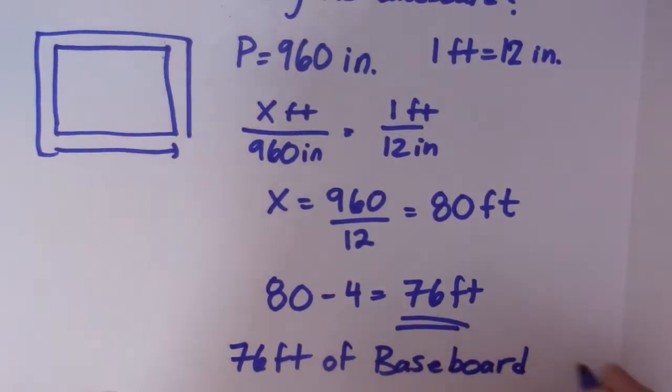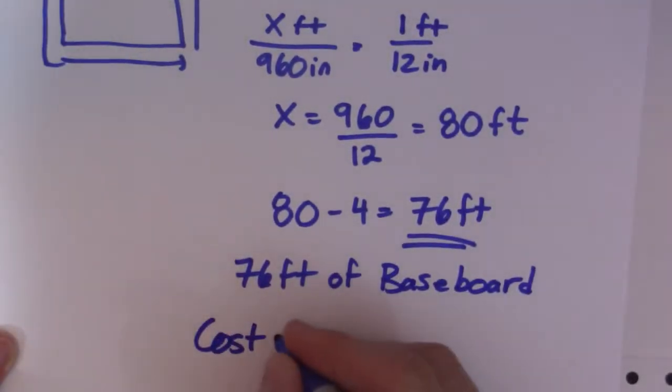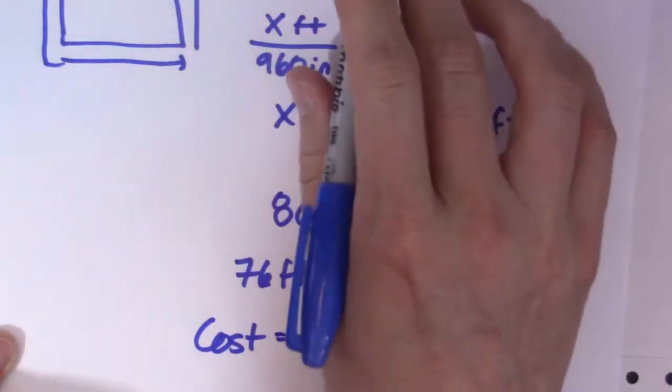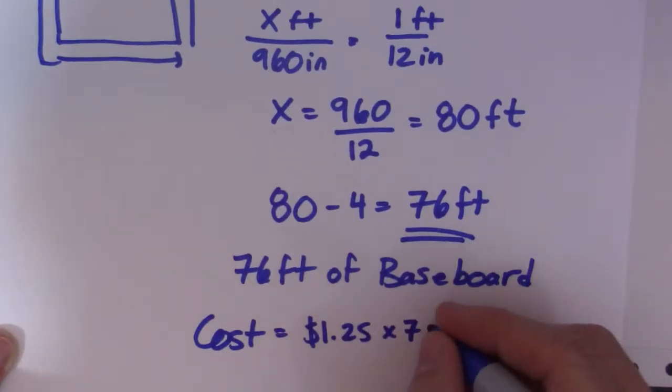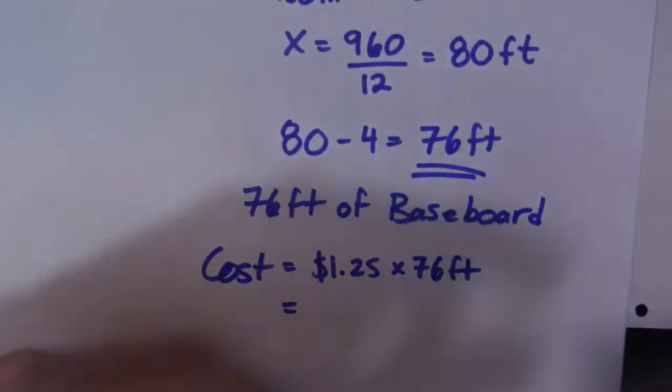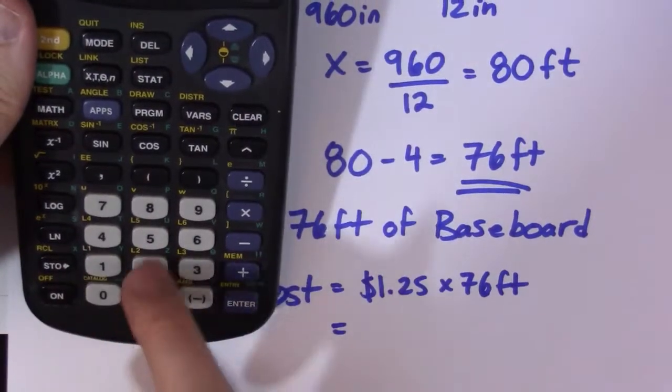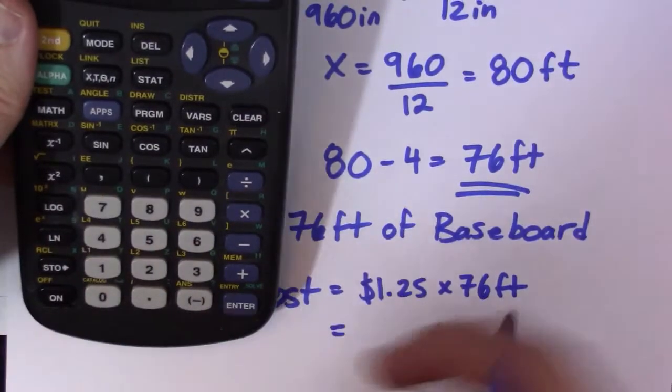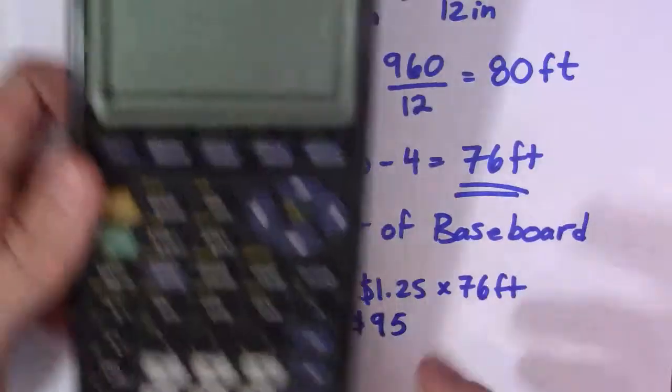So now I need to calculate the cost. If I have 76 feet and it costs $1.25 per foot, so $1.25 times 76 feet. I'll just do the math - $1.25 times 76 gives me $95, which is not too bad.